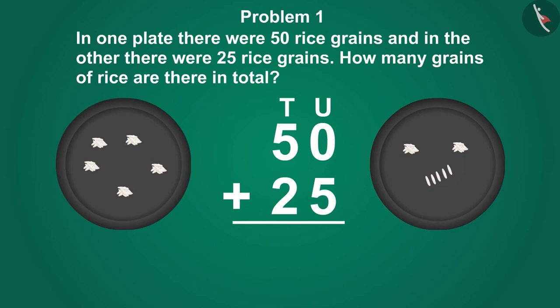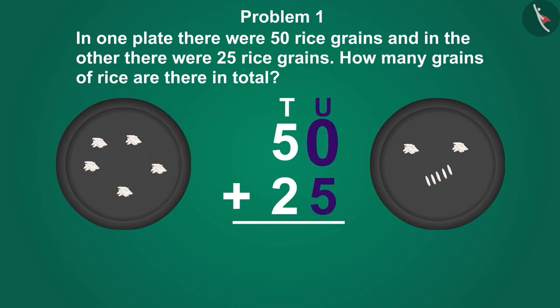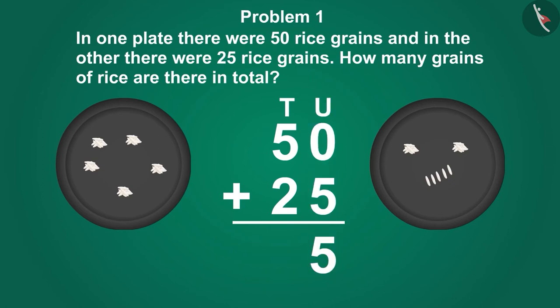First we will add the numbers written in the units place. 0 plus 5 is equal to 5, and this number is equal to the number of single rice grains. Come, let's write it under the units section like this.